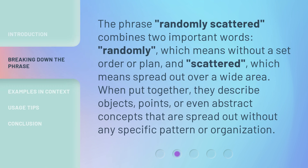The phrase 'Randomly Scattered' combines two important words: 'randomly,' which means without a set order or plan, and 'scattered,' which means spread out over a wide area. When put together, they describe objects, points, or even abstract concepts that are spread out without any specific pattern or organization.